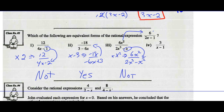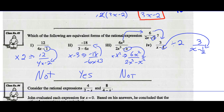For the last option: to make 6 look like 3, divide everything by 2 — 6 divided by 2 is 3, 2x divided by 2 is x, and negative 1 divided by 2 is negative 1/2. The denominator shown is not the same as x minus 1/2, so this is not an equivalent rational expression.